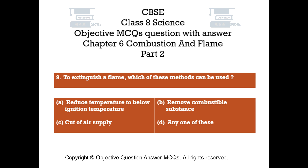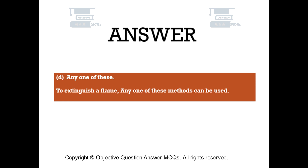Question number 9. To extinguish a flame, which of these methods can be used? Option A, reduce temperature to below ignition temperature. Option B, remove combustible substance. Option C, cut off air supply. Option D, any one of these. The right answer is Option D. To extinguish a flame, any one of these methods can be used.